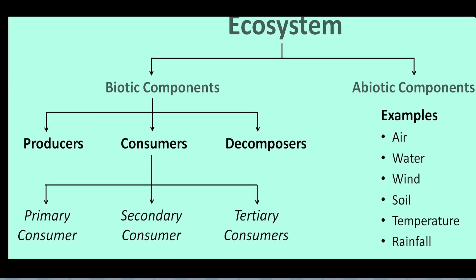The ecosystem is basically made up of two components: the biotic component and the abiotic component. The biotic component comprises producers, consumers and decomposers. Consumers are of three types: primary, secondary and tertiary. The abiotic component refers to non-living components — 'bio' means life, so biotic is living and abiotic is non-living. The abiotic component comprises air, water, wind, soil, rainfall and temperature. Both components are equally important and interdependent — we cannot live without air, water, wind, soil, temperature or rainfall.